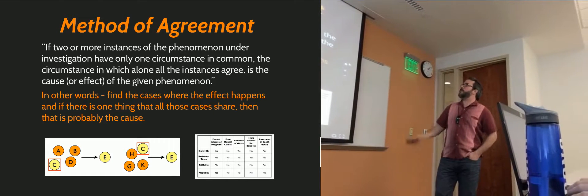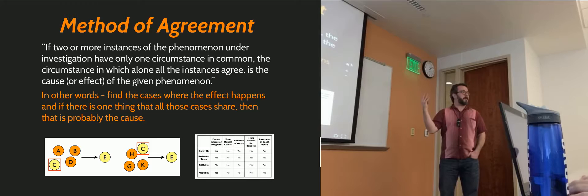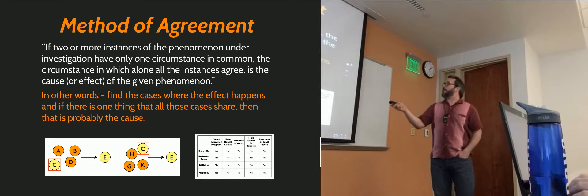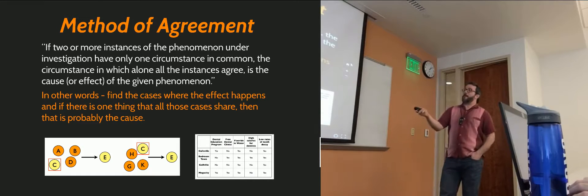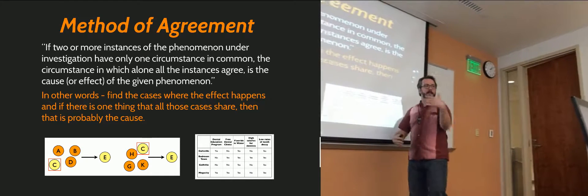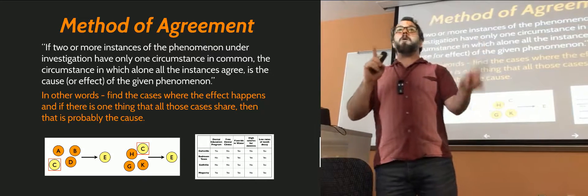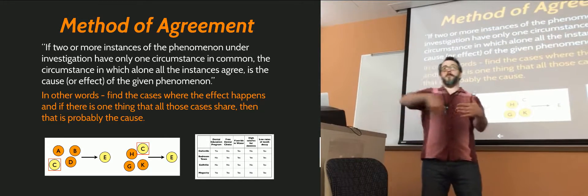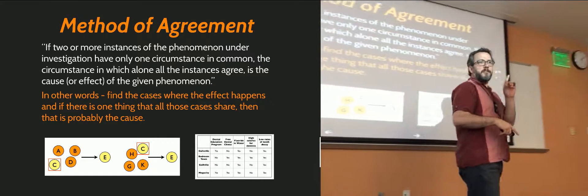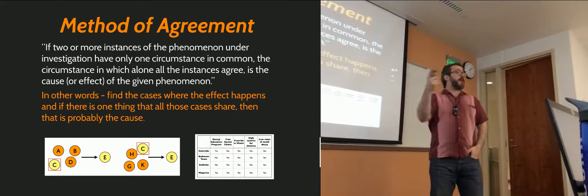The first method we're going to look at is known as the method of agreement. Mill says literally this: 'If two or more instances of the phenomenon under investigation have only one circumstance in common, the circumstance in which alone all of the instances agree is the cause or effect of the given phenomenon.' In other words, we find the cases where the effect is happening, look at as many as we can, and if there's only one other feature in common in all those cases, that counts as a reason to suspect these two things are causally linked.